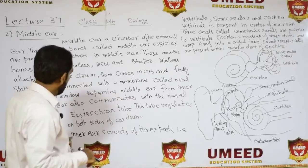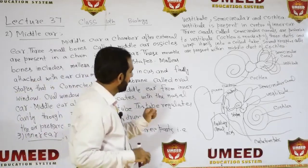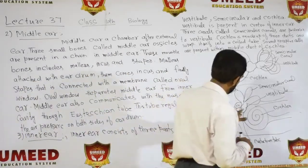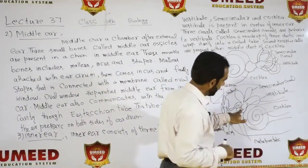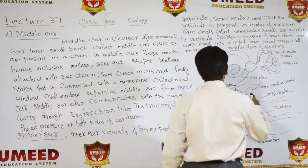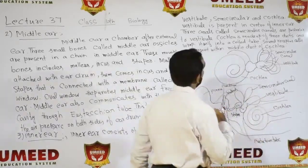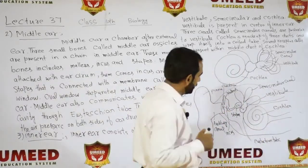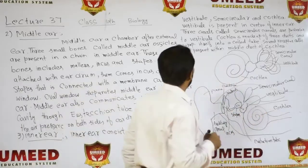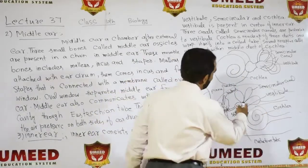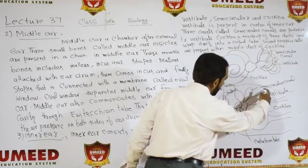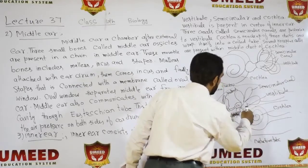The inner ear consists of three parts. The center part is called the Vestibule. You can see it here — this is called the Vestibule and Cochlea. The Vestibule is present in the center of the inner ear.